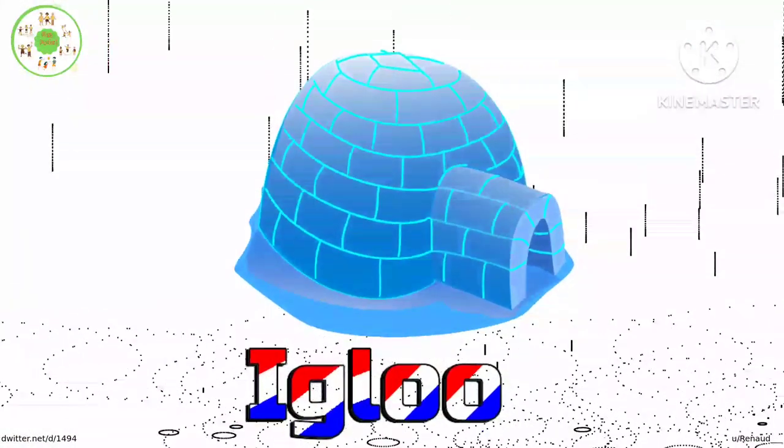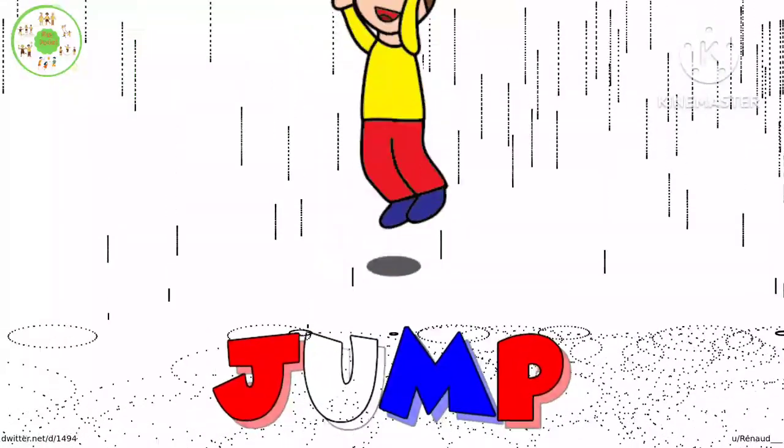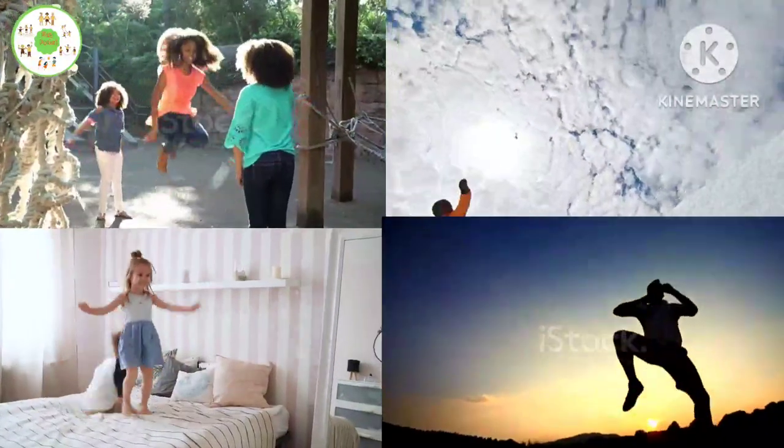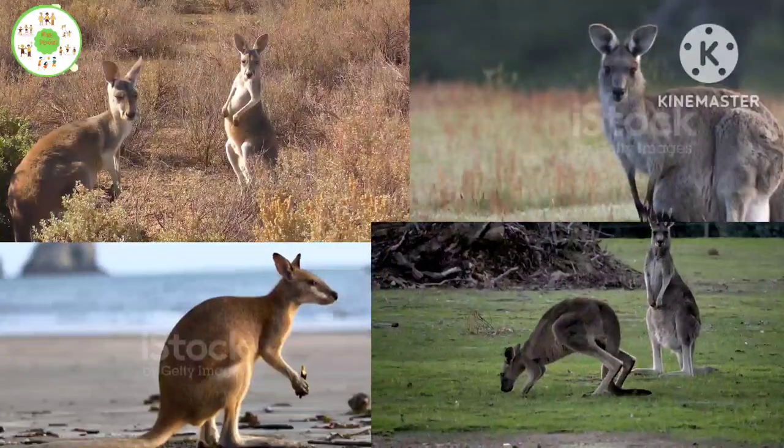I for igloo, igloo. J for jump, jump. K for kangaroo, kangaroo.